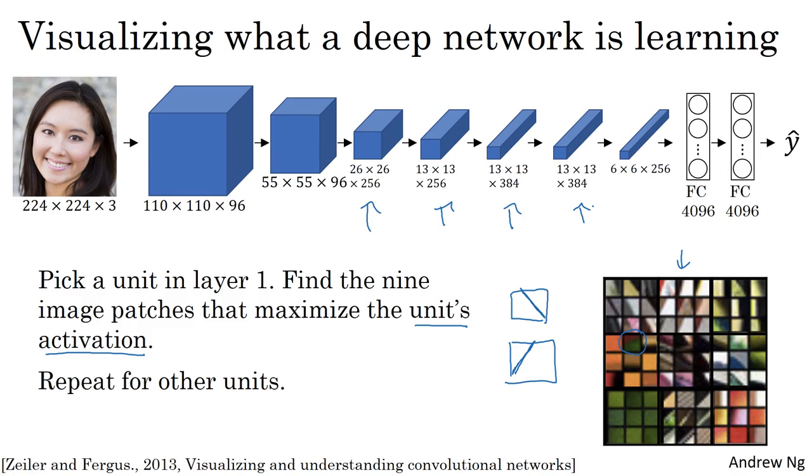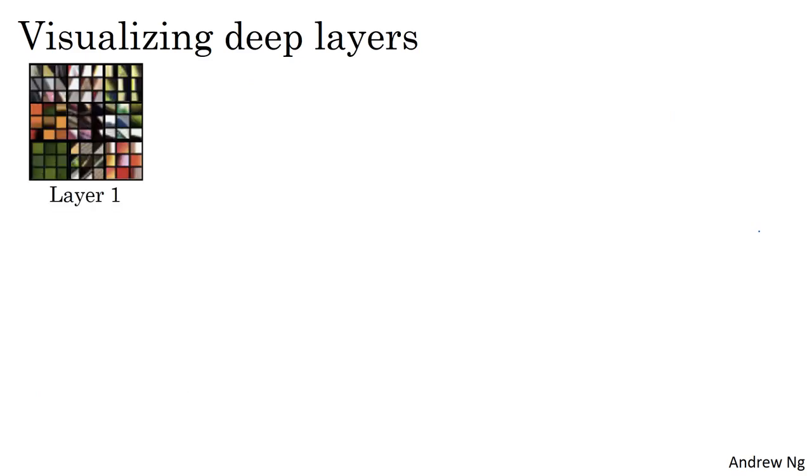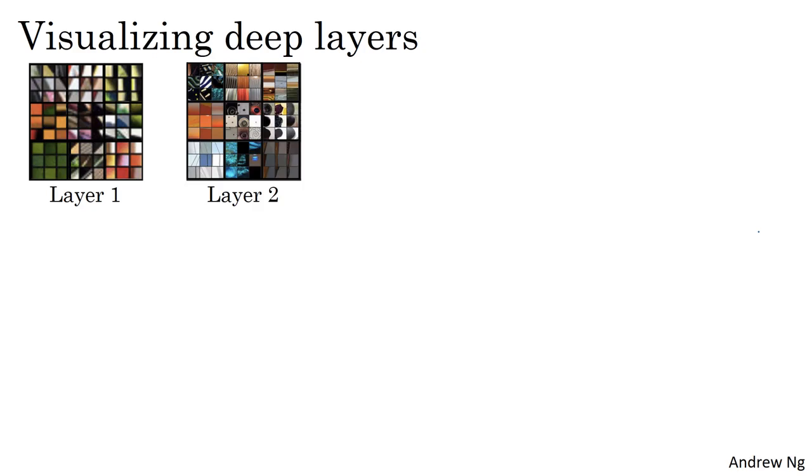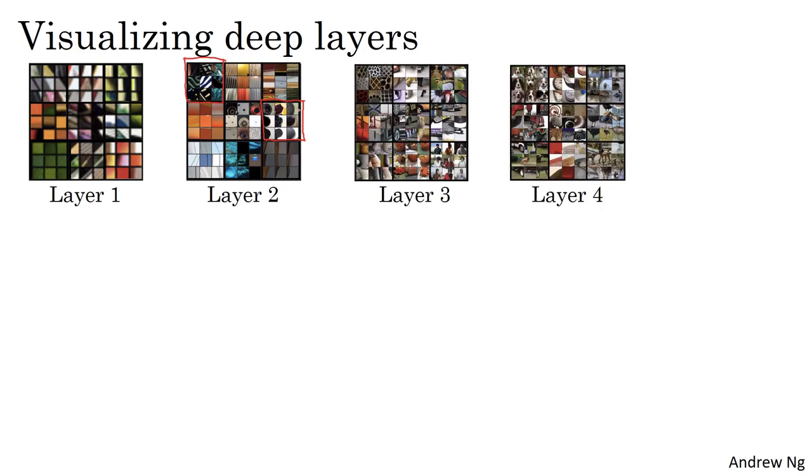So in the deeper layers, a hidden unit will see a larger region of the image, right? At the extreme end, each pixel could hypothetically affect the output of these later layers of the neural network. So later units are actually seeing larger image patches. I'm still going to plot the image patches as the same size on these slides. But if you repeat this procedure, this is what you had previously for layer one. And this is a visualization of what maximally activates nine different hidden units in layer two. So I want to be clear about what this visualization is. These are the nine patches that cause one hidden unit to be highly activated. And then each grouping, this is a different set of nine image patches that cause one hidden unit to be activated. So this visualization shows nine hidden units in layer two. And for each of them shows nine image patches that causes that hidden unit to have a very large output, to have a very large activation. And you can repeat this for deeper layers as well.